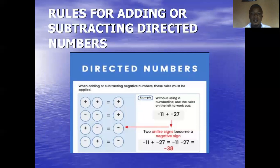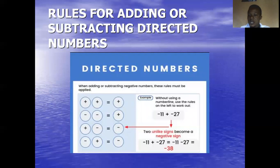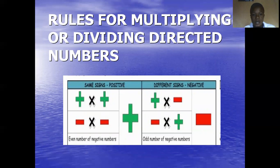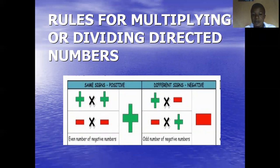Now let's see the rules for adding or subtracting directed numbers. You can see in the picture displayed: plus plus gives us plus; minus minus gives plus; plus minus gives minus; minus plus gives minus. In general, when the signs are similar — like plus plus or minus minus — it gives us a positive result. But once the signs are different — whether plus minus or minus plus — we have a negative result. For multiplying directed numbers: the same signs give a positive result, while different signs give a negative result.